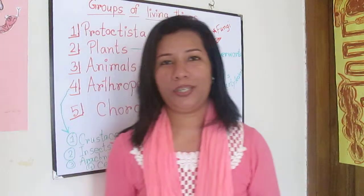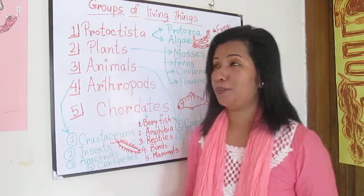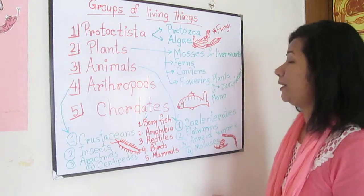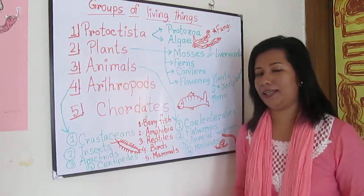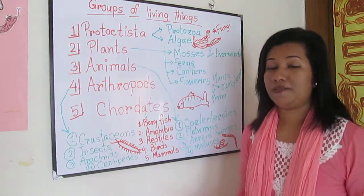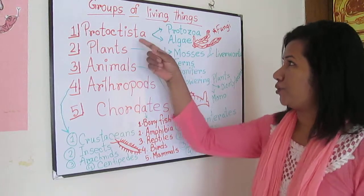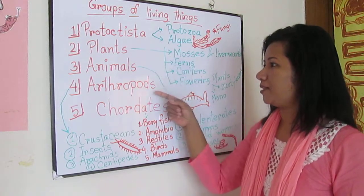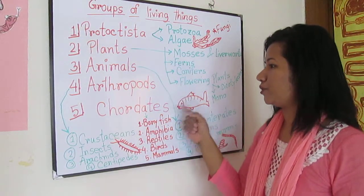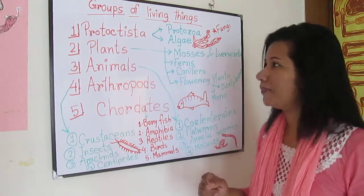Hi guys, today I'm going to teach you groups of living things. Living things have five kingdoms: Protoctista, plants, animals, arthropods, and chordates.